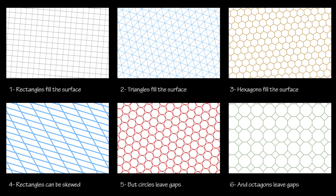A tessellation is different than a pattern — there's no space between the elements. These first four images are tessellations, very simple ones. Using the most basic shapes, you can tile a surface in only a few ways. With pure simple shapes, we all know well: a triangle, a rectangle, and a hexagon. The rectangle is special as it can be skewed, as illustrated in the fourth image. A circle? Nope — it does not tessellate. The octagon? Neither. These last two examples have spaces left over in between.